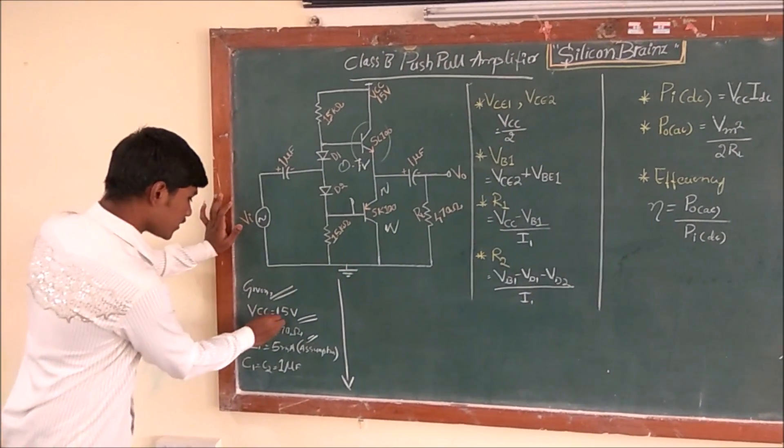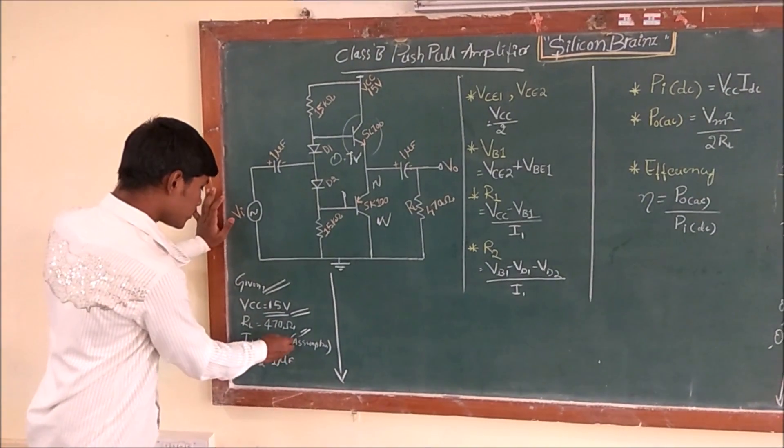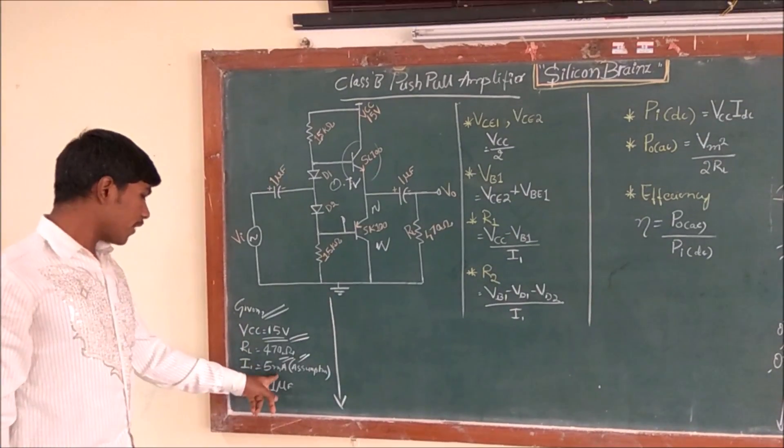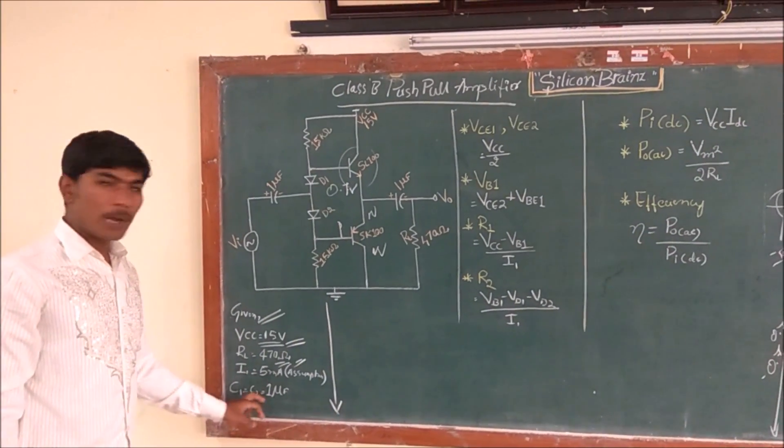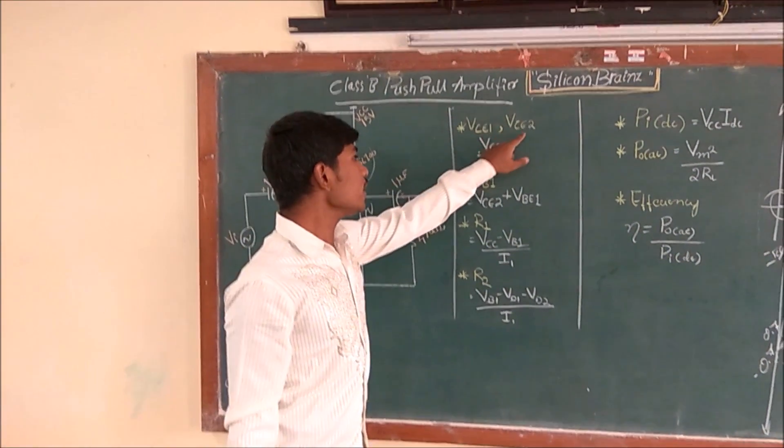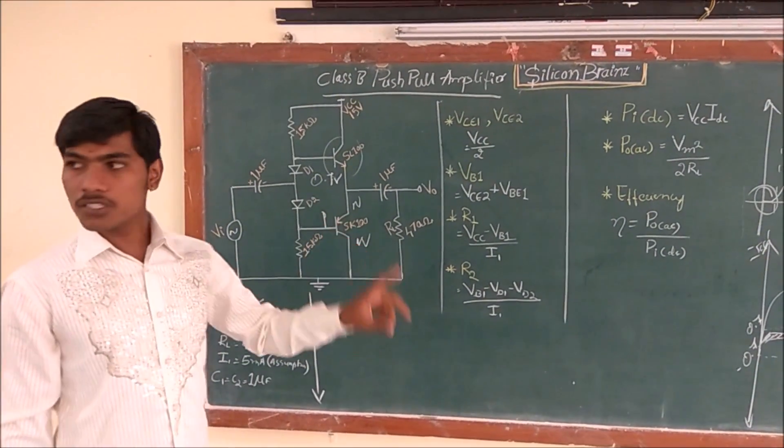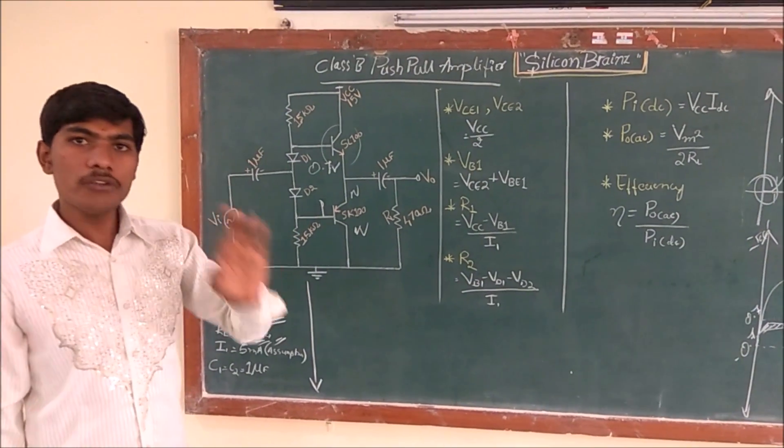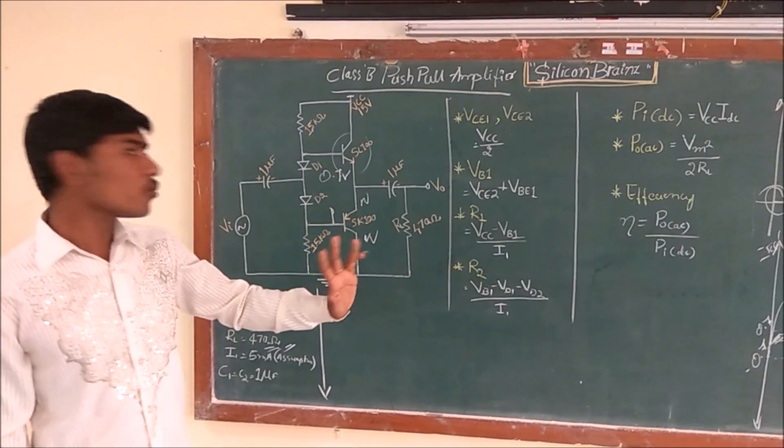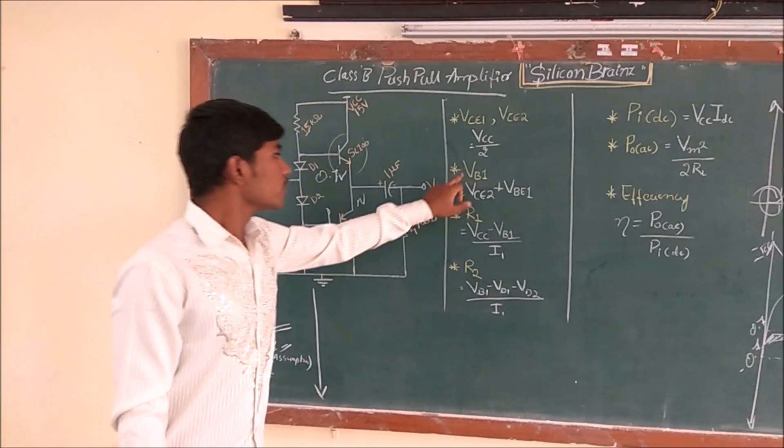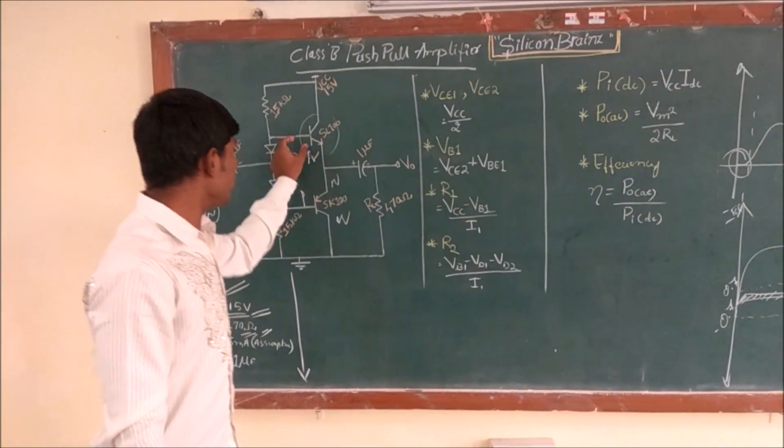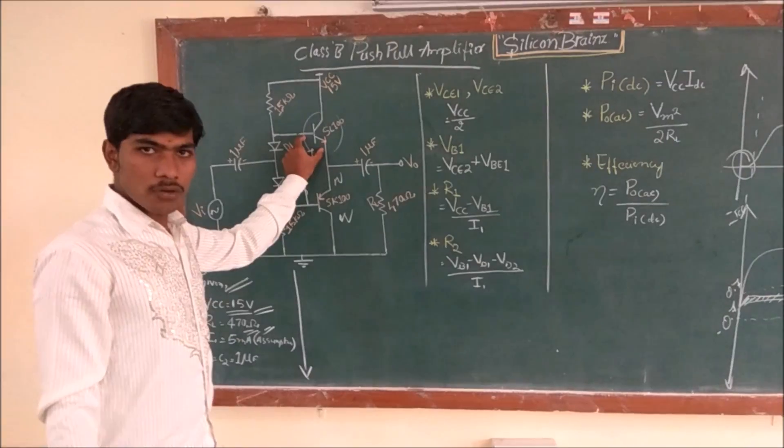This is the given value: VCC is 15 volts, RL is 470 ohms, I1 that means this bias current is 5mA, and C1, C2 are coupling capacitors, that's 1 microfarad. This is the VCE1 and VCE2. We know that the transistor across the collector and emitter voltage always should be half of the VCC.